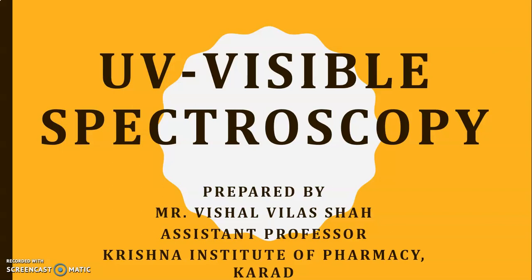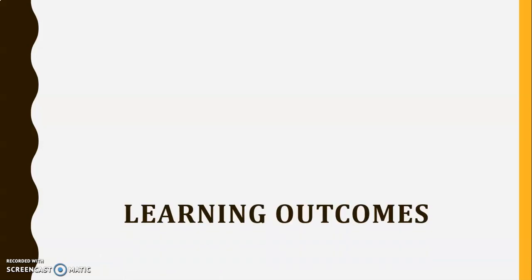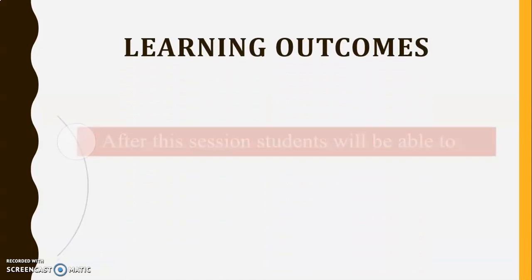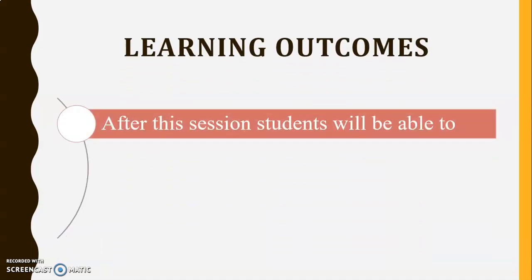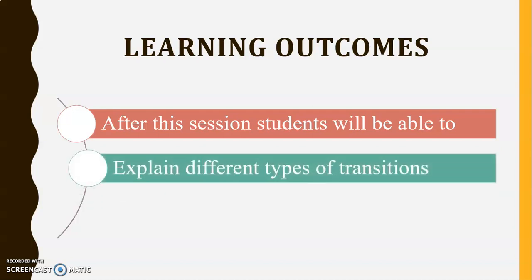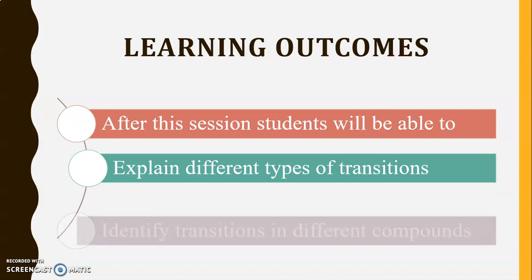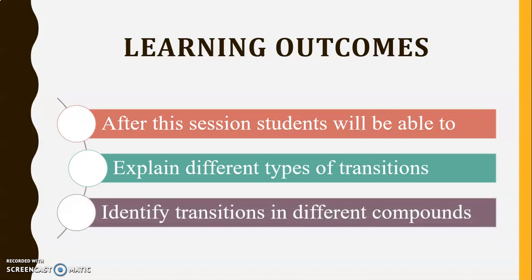First we will see the learning outcomes. After this session, students will be able to explain different types of transitions occurring in UV spectroscopy, and also they will be able to identify different transitions occurring in different compounds.